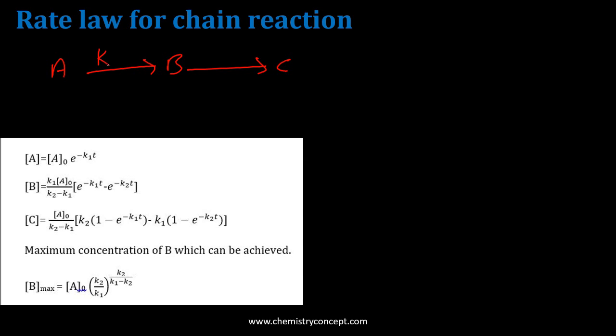It will have a rate constant k1 and rate constant k2. We have A, this is the reactant, it is going to decompose to B, and B is going to decompose to C. So this is the chain reaction.